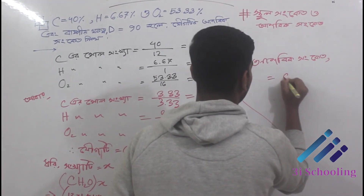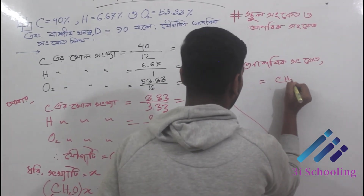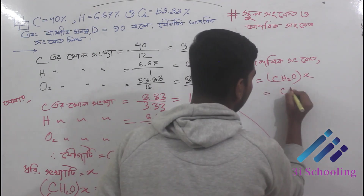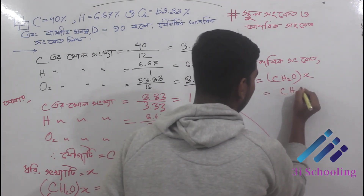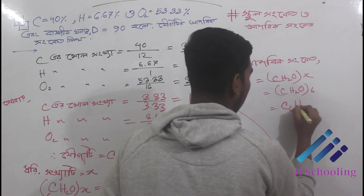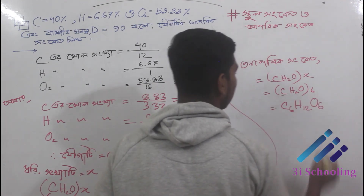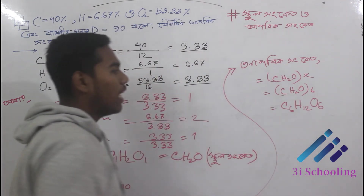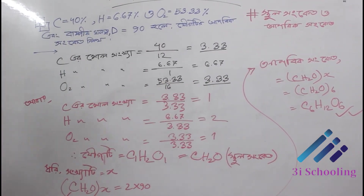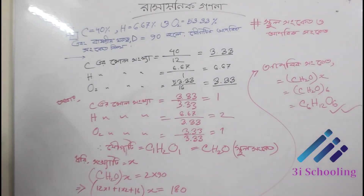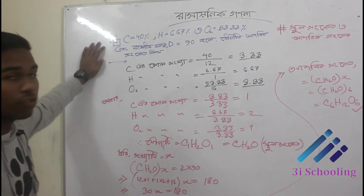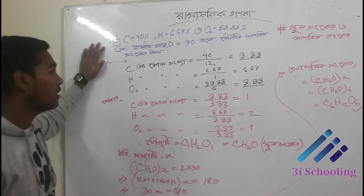The book is CH2O and X equals CH2O, 6 is C6, H12, O6. So the molecular formula is C6H12O6. If we have the problem, we have a condition of our solution.